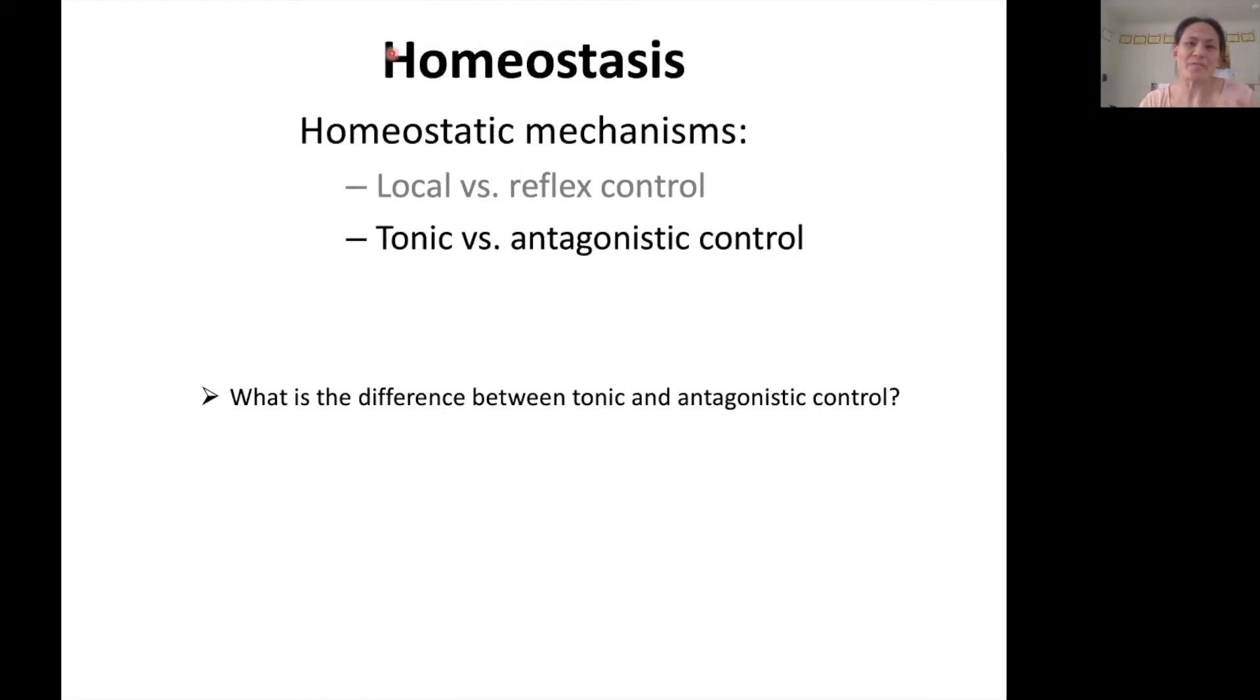So remember, we first talked about homeostasis, what it is, and what a set point is. And then we went on to talk about homeostatic mechanisms, different ways that we go about maintaining homeostasis. So in the last video, you heard about local versus reflex control. Now we're going to move on to this topic of tonic versus antagonistic control.